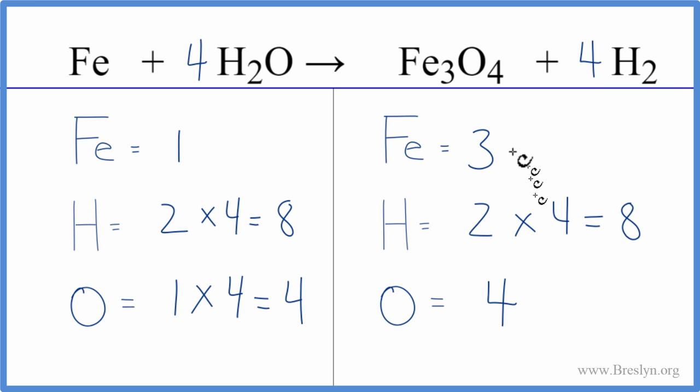So those are balanced, and we waited to do the irons, because all we need to do is put a three in front of the Fe. One times three. That gives us three, and we're done.